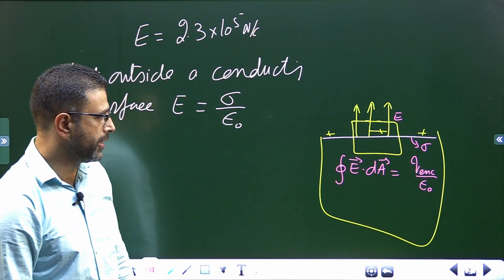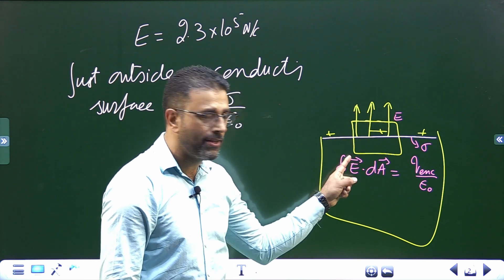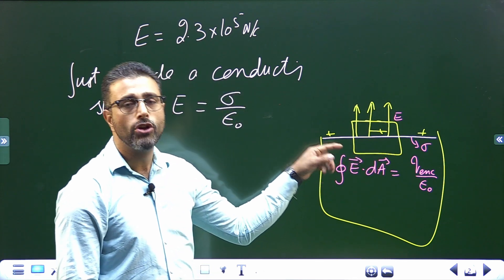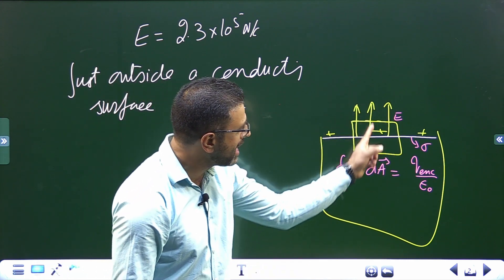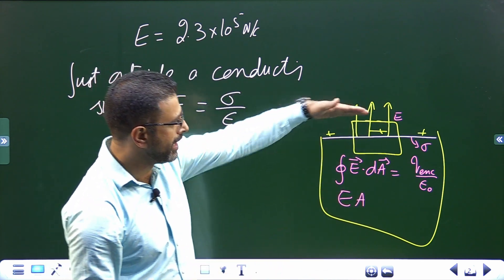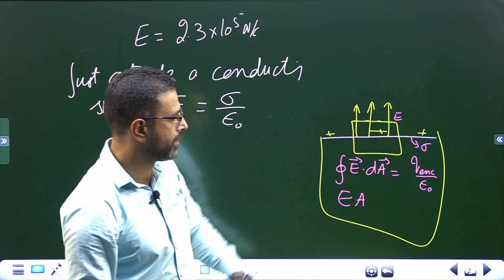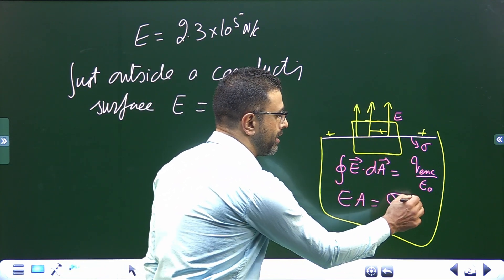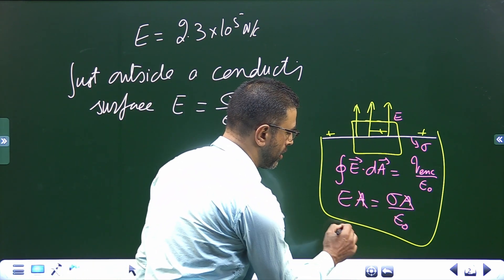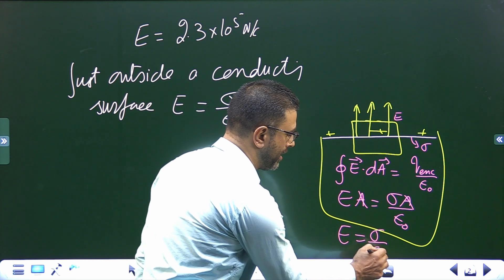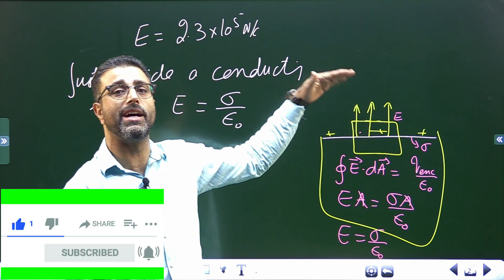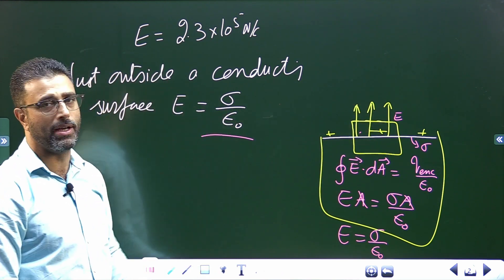Q enclosed divided by epsilon naught. There are no field lines crossing the side faces or the bottom face inside the conductor, so field passes through only one face — the top face. The flux is simply E times A, where A is the area of the top surface. This equals Q enclosed, which is sigma times A, divided by epsilon naught. A and A cancel out, so the field equals sigma divided by epsilon naught. Therefore, the field just outside a metallic conducting surface is always sigma divided by epsilon naught.